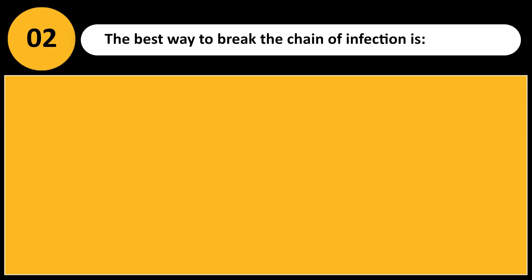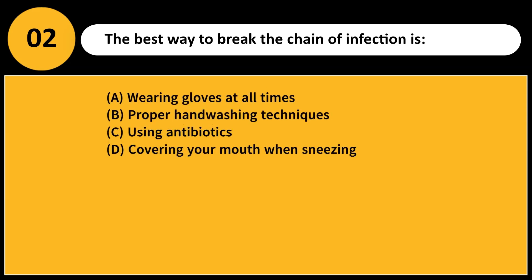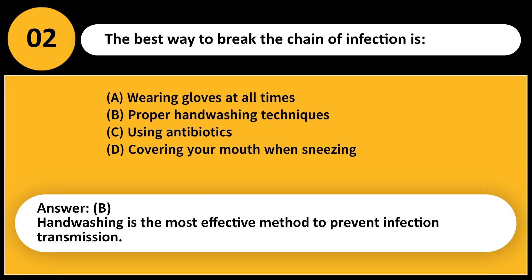The best way to break the chain of infection is: A. Wearing gloves at all times. B. Proper hand washing techniques. C. Using antibiotics. D. Covering your mouth when sneezing. Answer: B. Hand washing is the most effective method to prevent infection transmission.